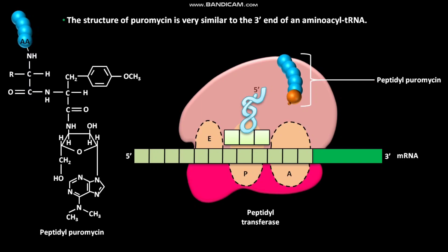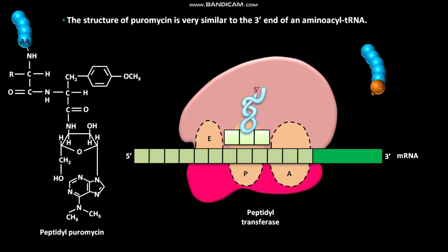Puromycin resembles only the 3' end of the tRNA, so it does not engage in translocation and dissociates from the ribosome shortly after it is linked to the carboxyl terminus of the peptide. This dissociation prematurely terminates polypeptide synthesis.